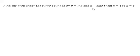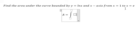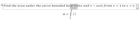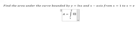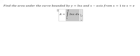The area is bounded by y = ln(x) and the x-axis, from x = 1 to x = e. We can see that the curve ln(x) from x = 1 to e is above the x-axis, so we put it as a positive value.